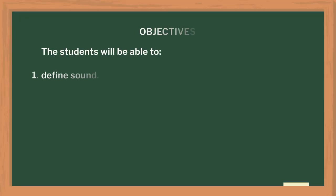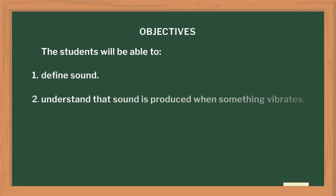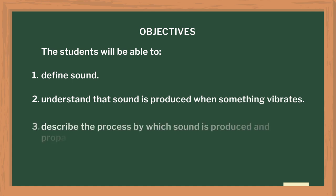Before we start teaching this lesson, we have to make sure that the students know about states of matter, vibrational motion, and sound as a form of energy. Through this lesson, the students will be able to define sound, understand that sound is produced when something vibrates, and describe the process by which sound is produced and propagated.